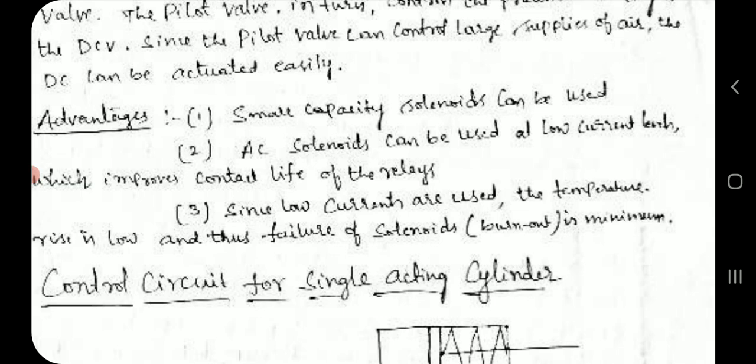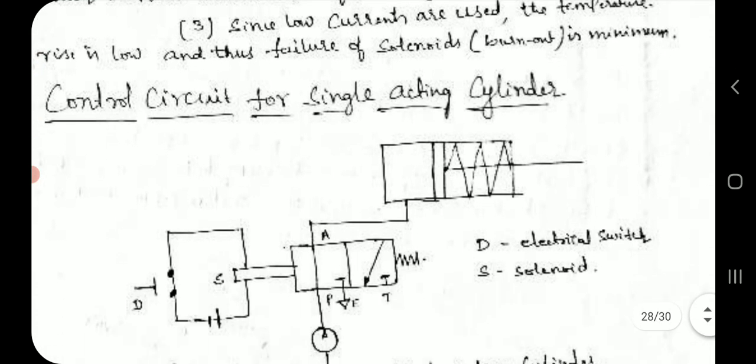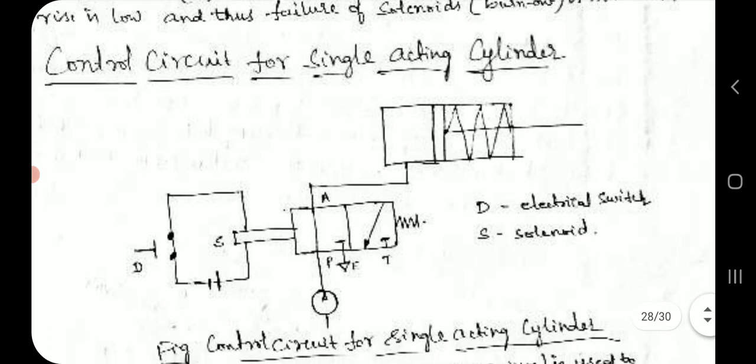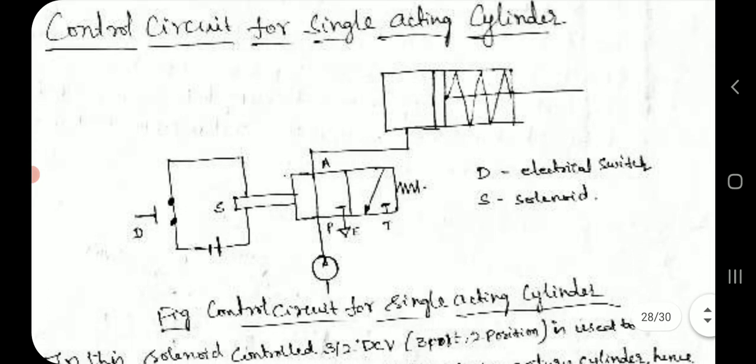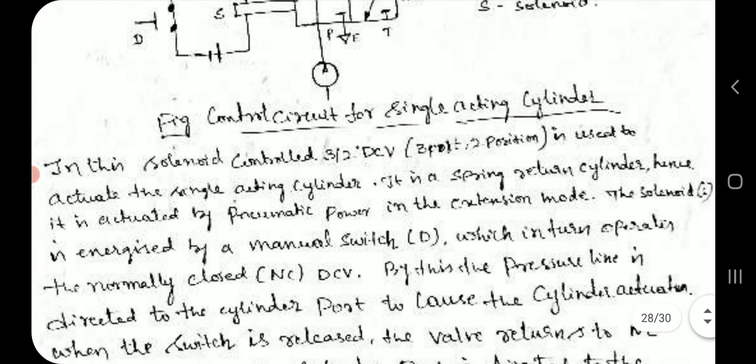Advantages: Small capacity solenoids can be used. AC solenoids can be used at low current levels, which improves contact life of the relays. Since low currents are used, the temperature rise is low, and thus failure of solenoids by burnout is minimum.